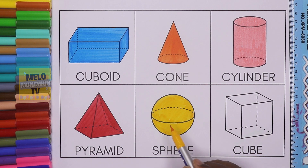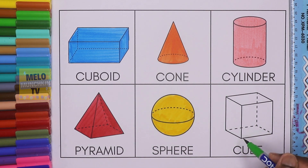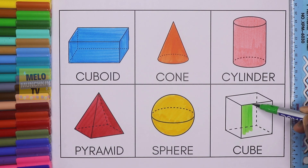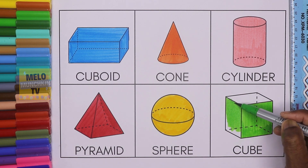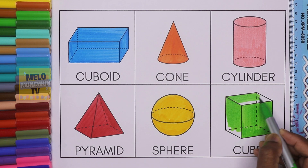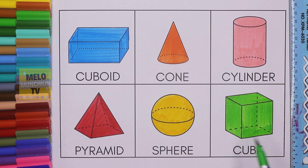Finally I'll take light green color to color the cube. This is cube — it's the 3D shape of a square. C-U-B-E, cube, and this is green color.